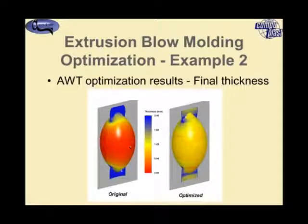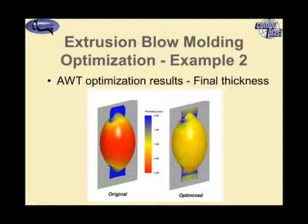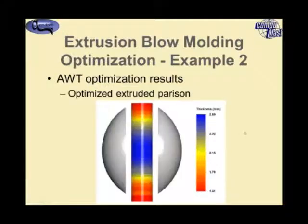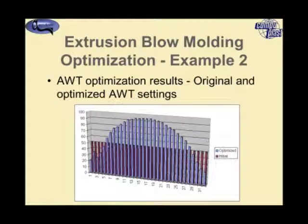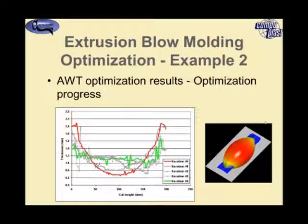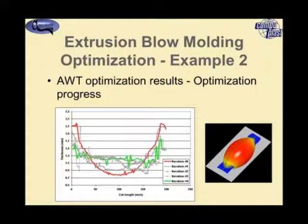We can see the non-uniformity of thickness with the unoptimized parison shape, and then with the optimized parison shape we see a much more even thickness distribution throughout the part. To achieve that we produce a parison with this type of axial wall thickness variation coming out of the die — this is the control you would use on the system to adjust the extrusion. These are the progression steps of the optimization from iteration 0 to iteration 4, resulting in a much more uniform final result.